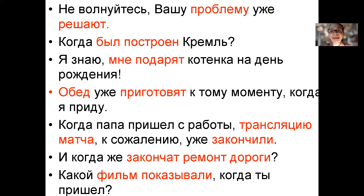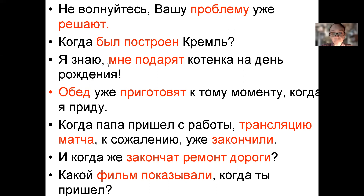Obviously, the easiest solution is to put a formal subject like 'it', 'they', 'people', 'somebody', and so on. Like, for example, saying 'somebody is solving your problem', or 'when did the Moscovites build the Kremlin?', or 'someone will present me a puppy'. But if we don't want to go this way, is there another solution?